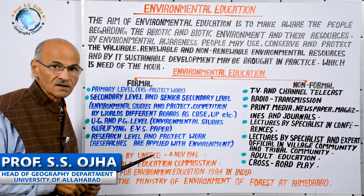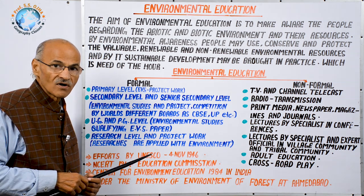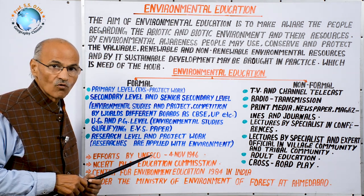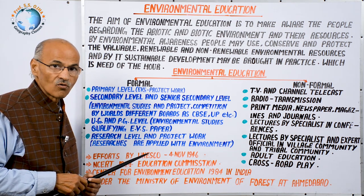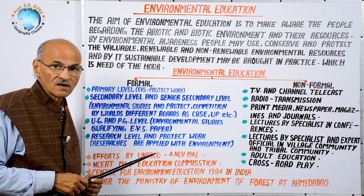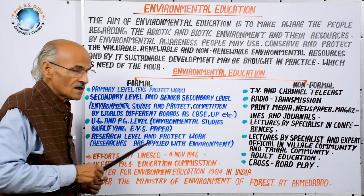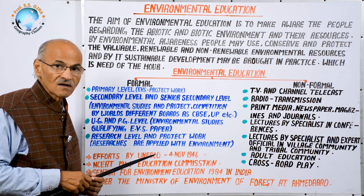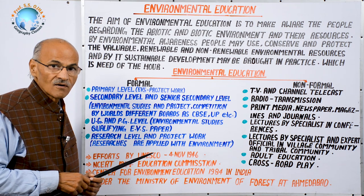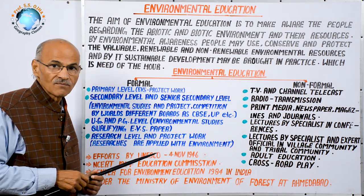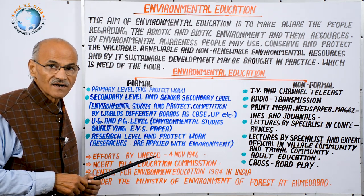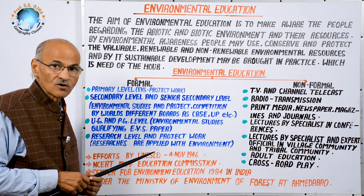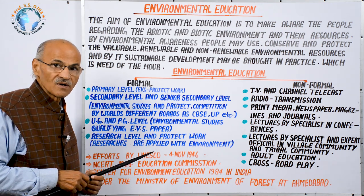Before pre-primary level, when a child is with the mother, that child is inclined towards the environment, especially the biotic environment — a dog, a cow — and the child loves them. When the child is admitted to school at pre-primary level, they learn letters with the help of animals or environmental biotic ingredients. For example, C for cow. The environmental biotic factors help that child remember the shape of letters in English, Hindi or other languages.